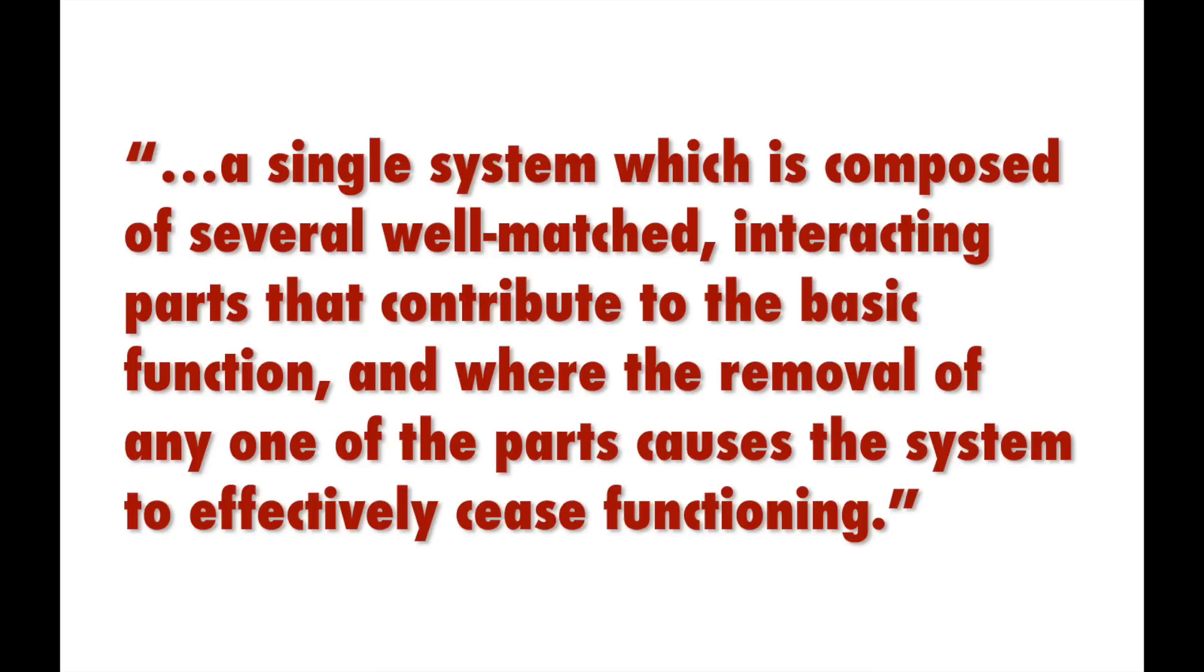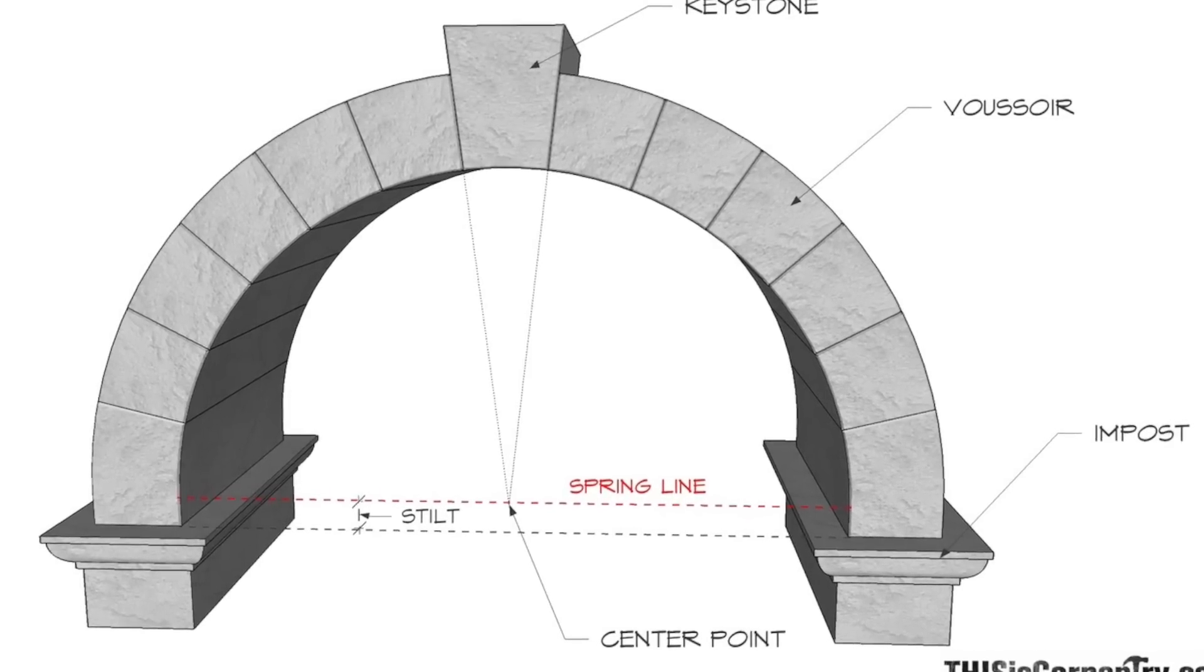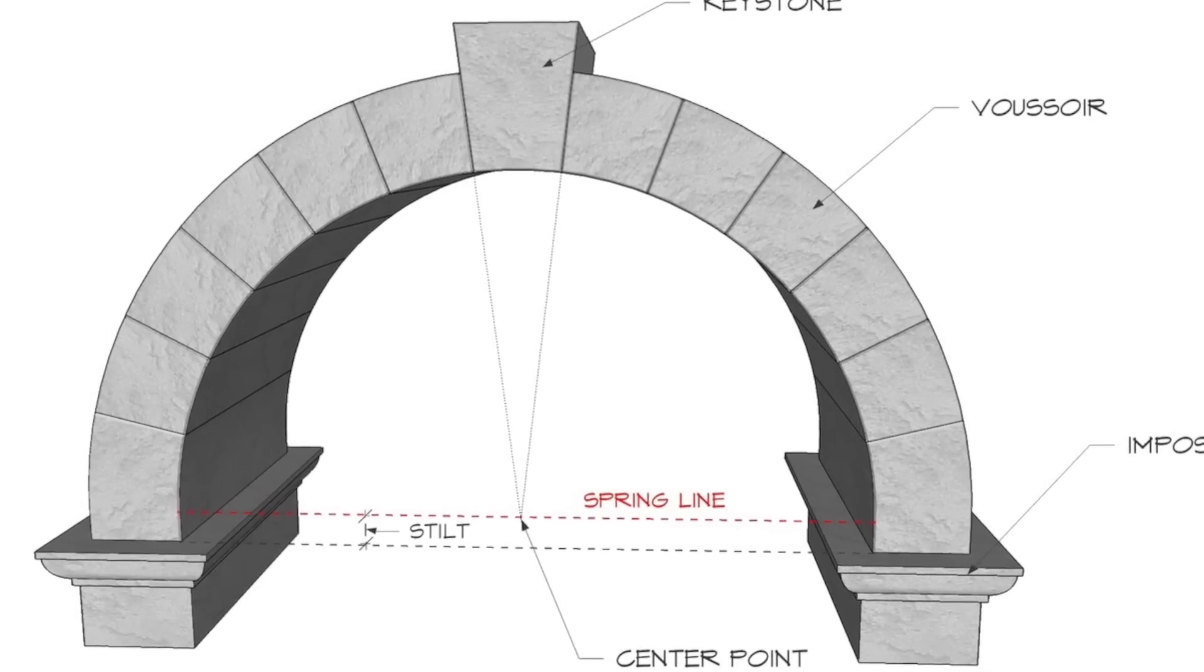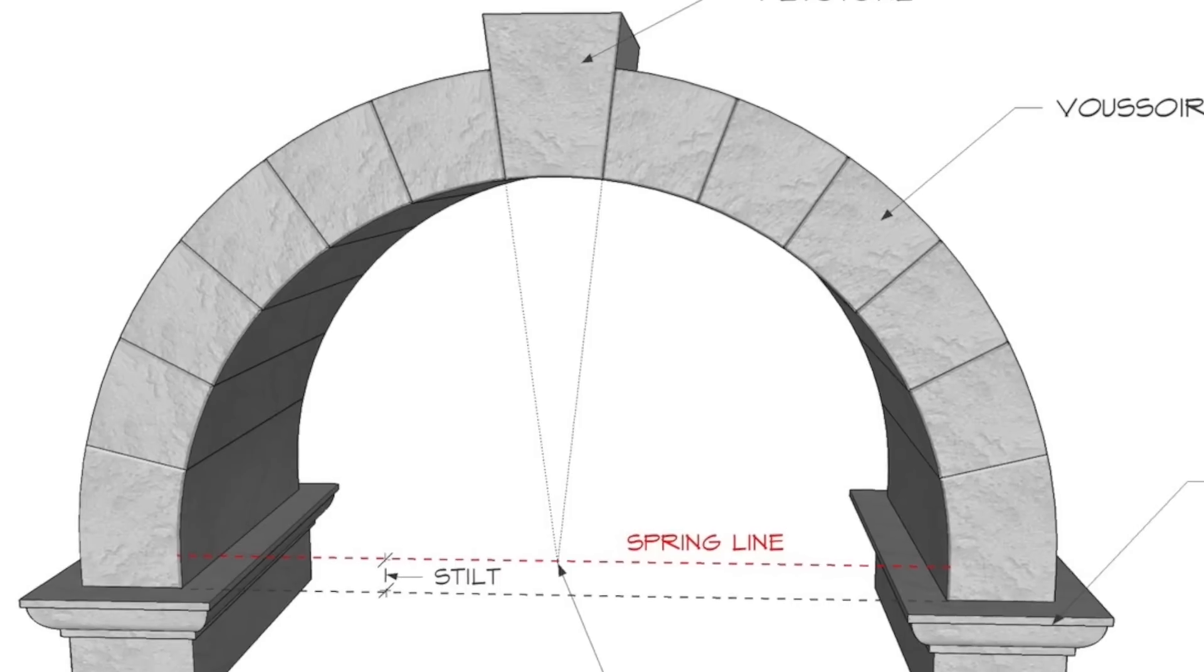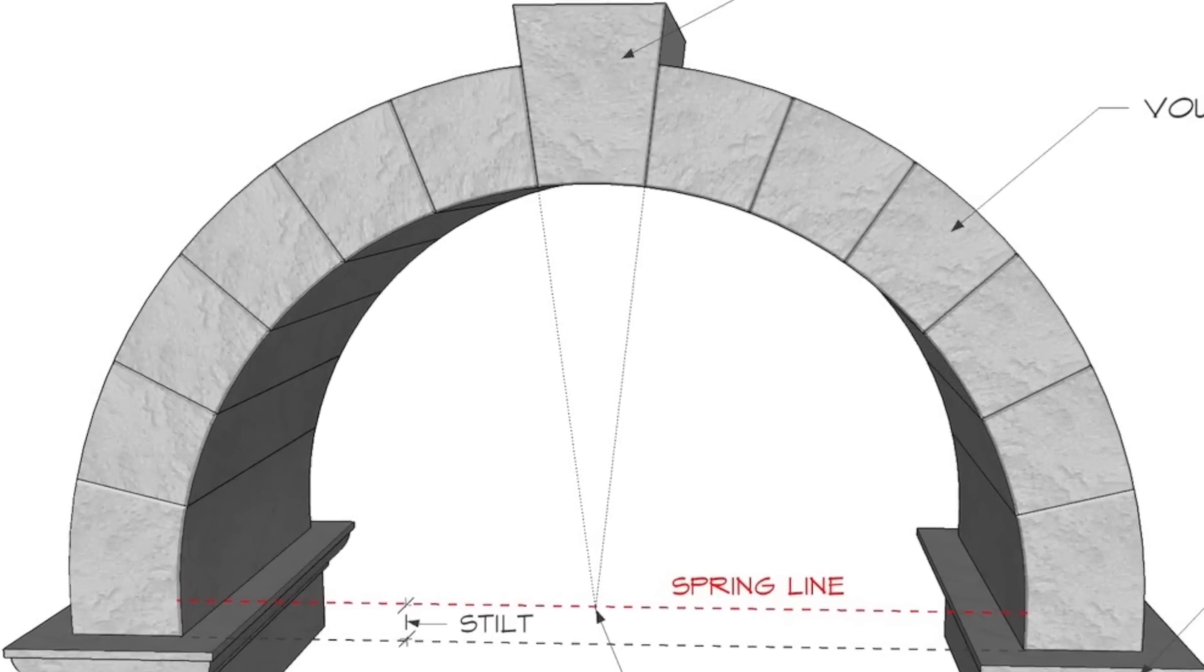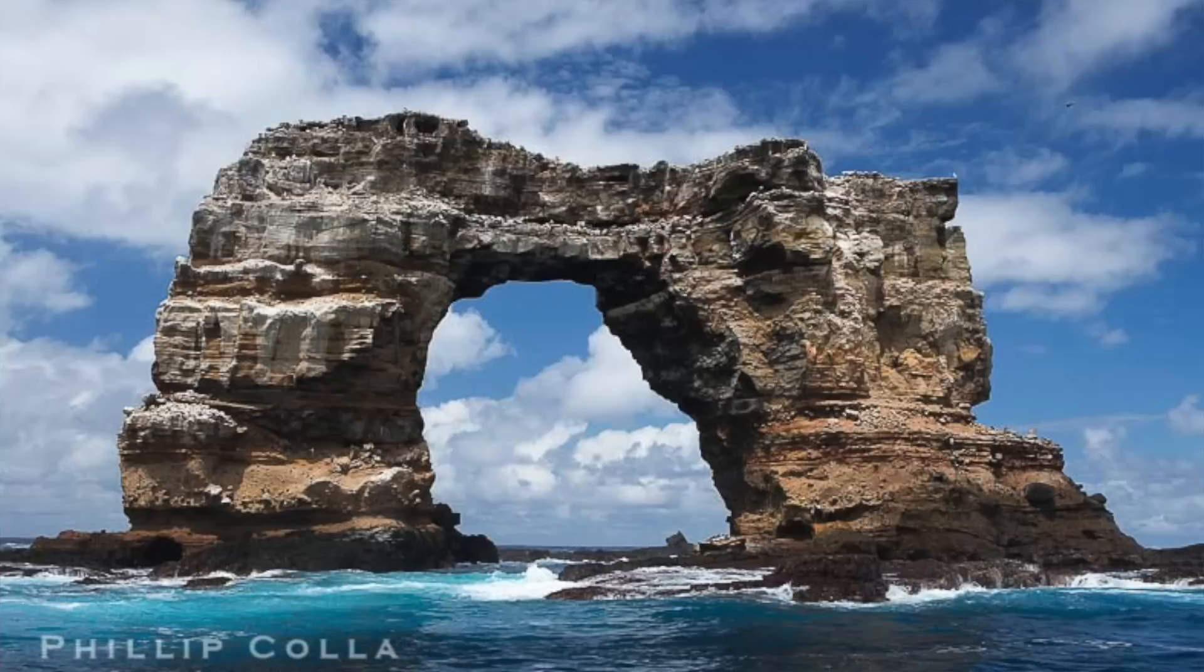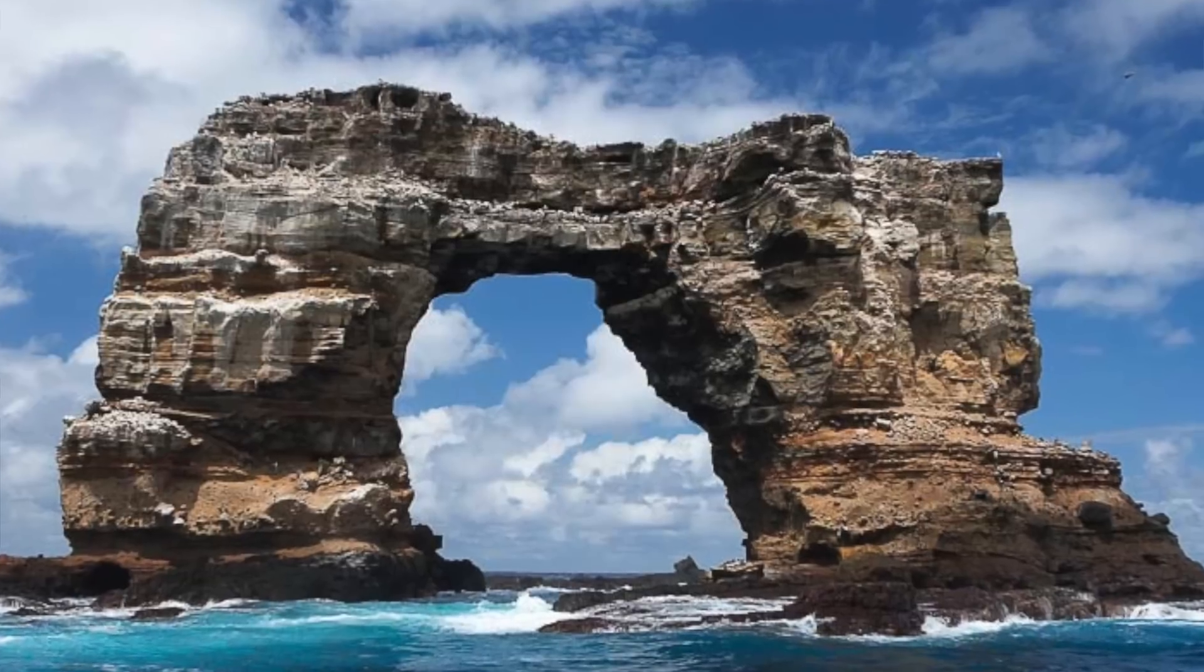For example, one of the first issues people had with the argument is that there really are asymmetries in construction-deconstruction. And it clearly doesn't handle that well at all. One of the first counterexamples is this one, an arch. An arch is a self-supporting structure that falls apart if you remove even one piece. It is irreducibly complex. Yet somehow arches are assembled in a stepwise fashion all the time. People build arches. We can even find lots of examples of completely natural arches. How is that possible?